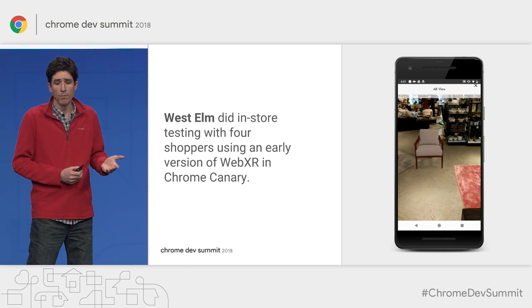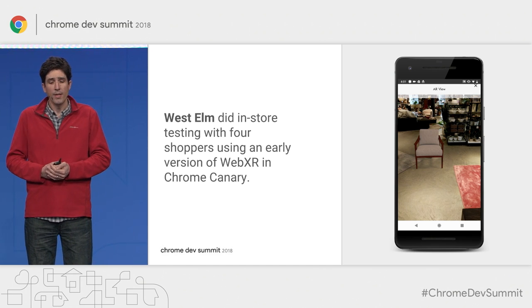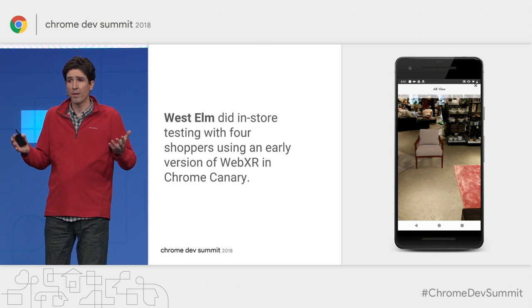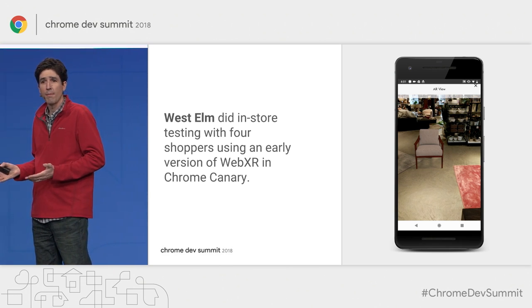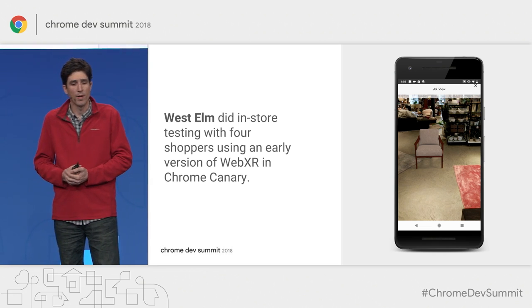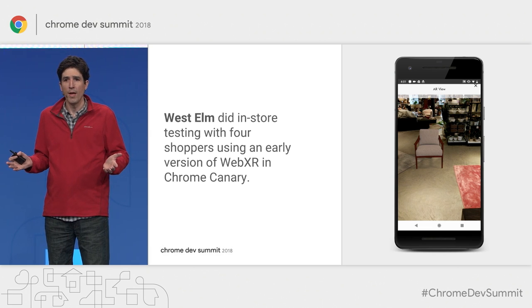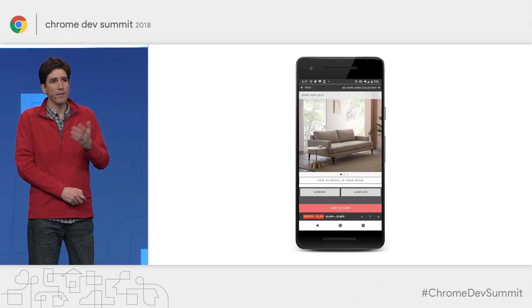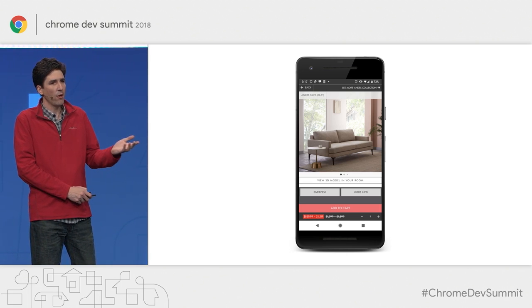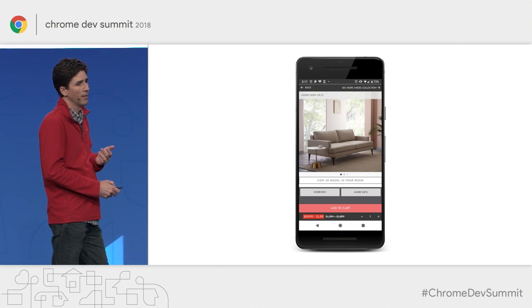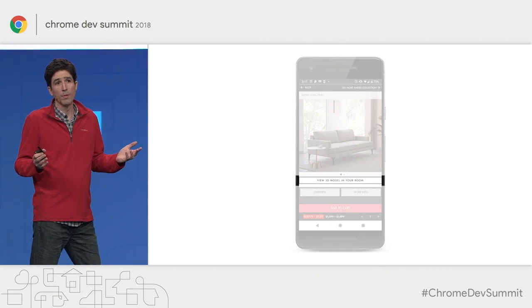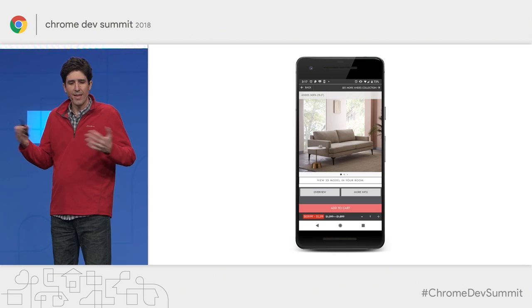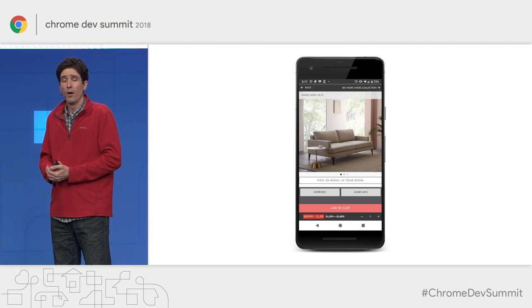West Elm, who sells home decor and furniture, did some in-store testing. They picked four shoppers at random and showed them a prototype shopping website incorporating augmented reality. They had some interesting findings and gave us permission to share them. The first thing they learned is that the terms AR or augmented reality aren't really common vocabulary. Basic terminology like 'view in your room' is better — but even then, without a visual showing what's going to happen, that text can get lost with everything else on the site.